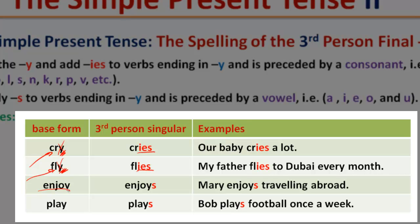Add only -s to verbs ending in -y and is preceded by a vowel, for example: a, i, e, o, and u. These letters are vowels. Examples: Enjoy becomes enjoys. Mary enjoys traveling abroad. Play becomes plays. Bob plays football once a week. Notice here that the letter y is preceded by a consonant, in this case we delete the y and add -ies. Whereas in the verbs enjoy and play, the letter y is preceded by a vowel. In this case keep the y as it is and add only -s.